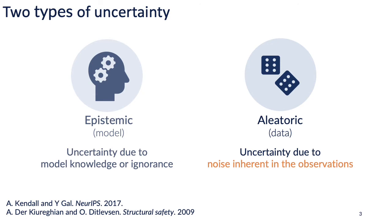These definitions are nuanced and there's a lot of debate about what falls into which category. There's a good article called 'Aleatory or Epistemic Doesn't Matter' in the journal Structural Safety, which reviews these terms if you're interested.